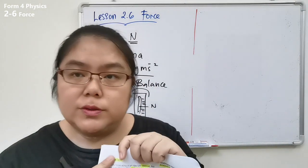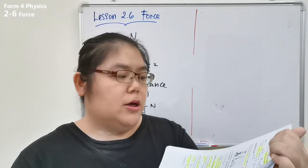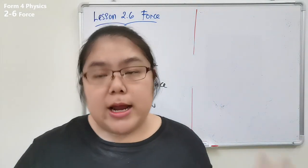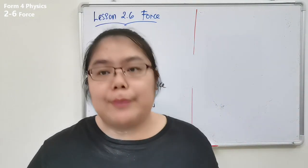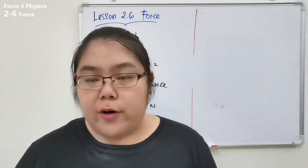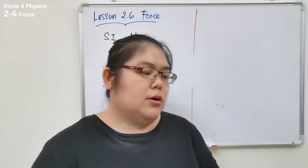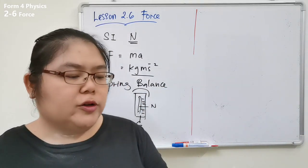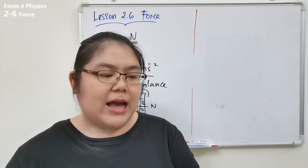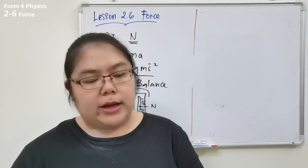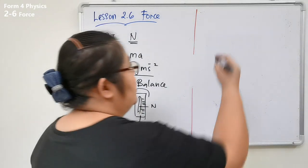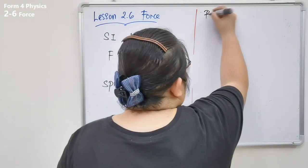Now we go to the next page about balanced and unbalanced force. There are two types: balanced force and unbalanced force. Balanced force is when the forces acting on an object are balanced — they cancel each other out — so the net force becomes zero.